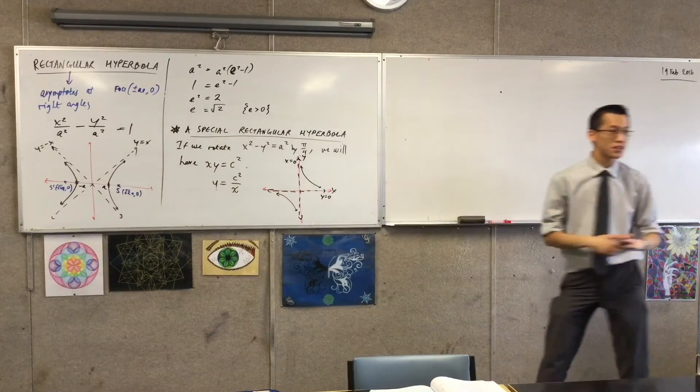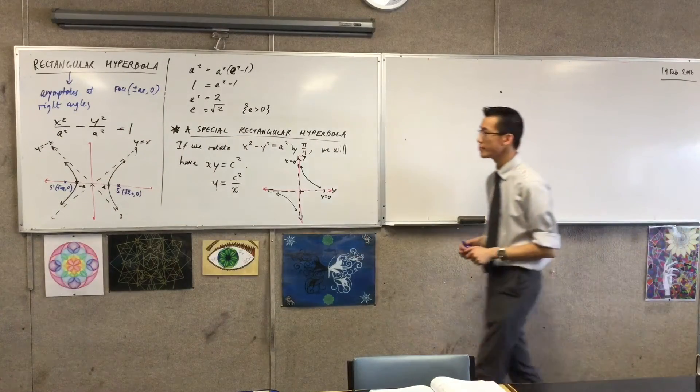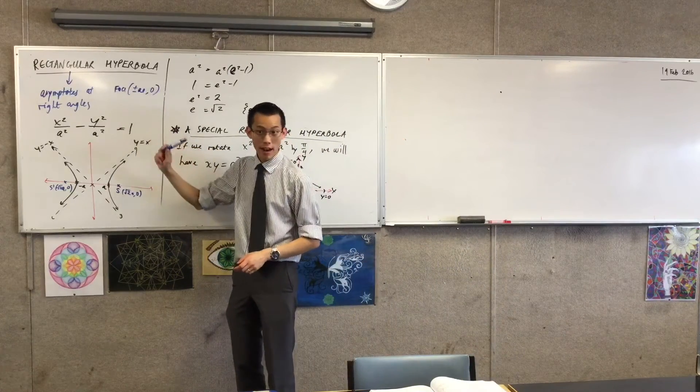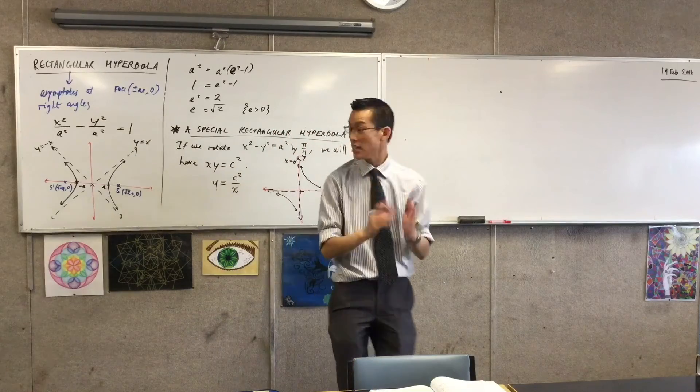Now, likewise, I'm going to have the directrices. Where are they? They're at A on E, right? X equals plus or minus A on E.